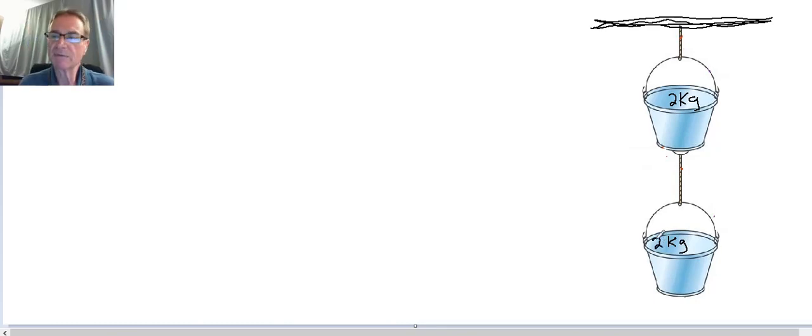We would like to know what the tensions are in the ropes that are connecting the buckets. Because these are not the same ropes, there's probably going to be two different tensions. We're going to call this one T1 up here and this one T2 down here. Since the top rope is connected to a branch, we're assuming that the system is not accelerating, so our acceleration is going to be zero.